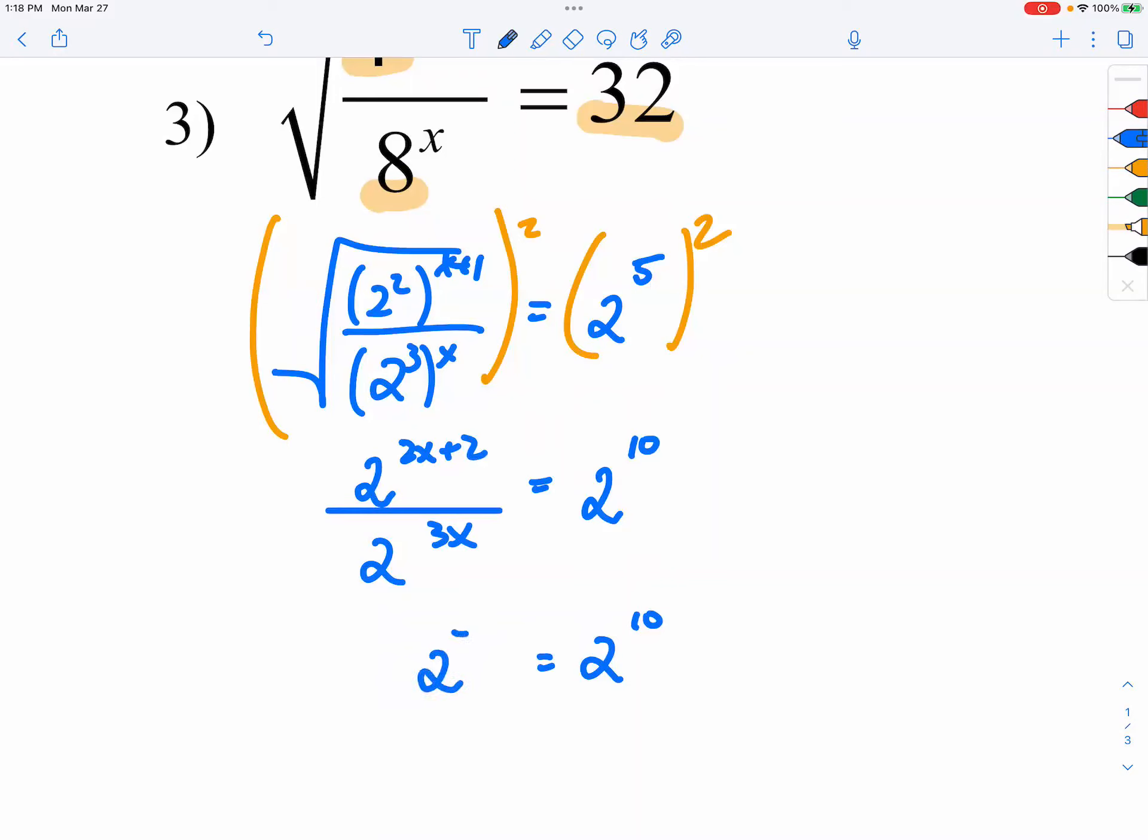So, on the left, I would have 2 to the negative x plus 2 power, because you subtract the exponents. So, you have negative x plus 2 equals 10.